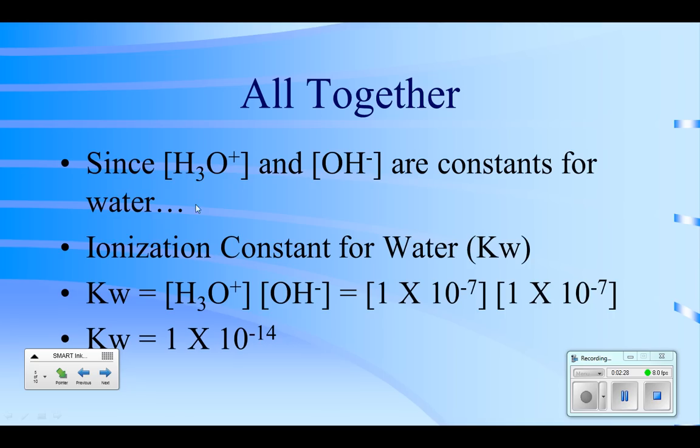We know that the hydronium ion concentration and hydroxide ion concentration are the same, and they are values that are constant for water. As long as we have water, we're going to get that 1 × 10^-7. So we're going to develop a new number here called the ionization constant for water. It's given the symbol Kw, or just K sometimes.